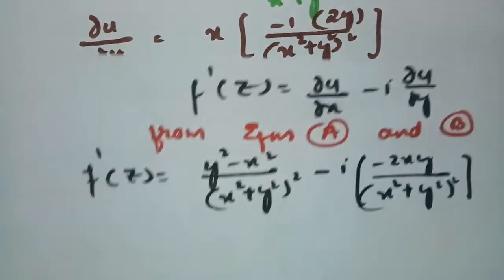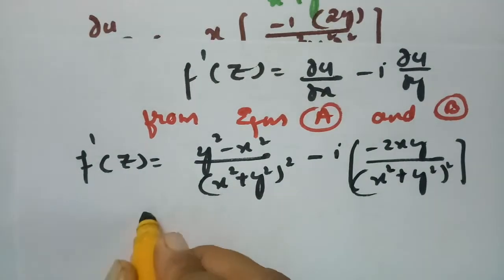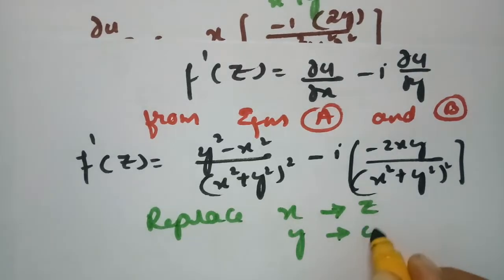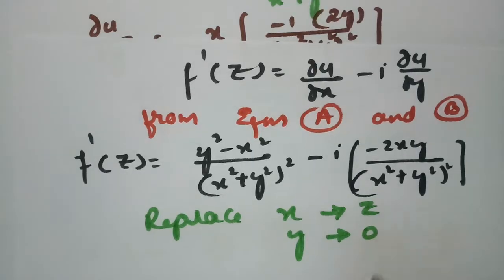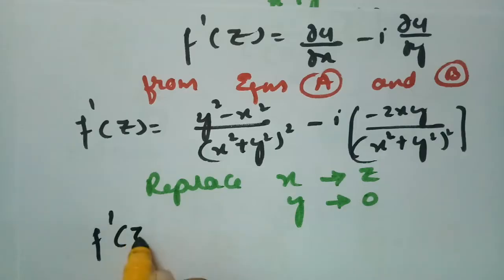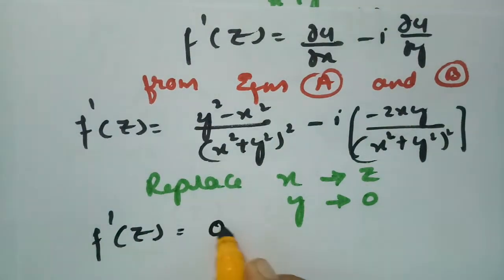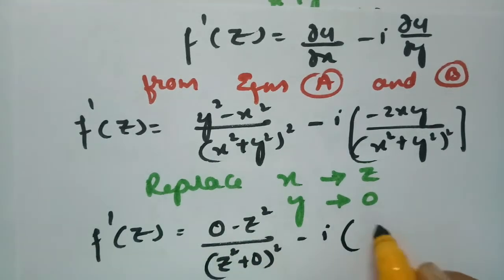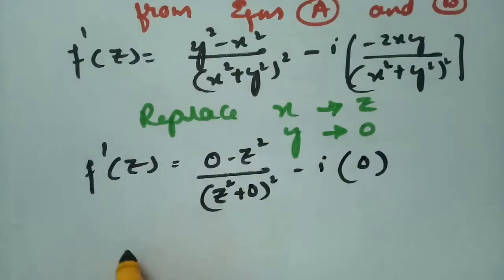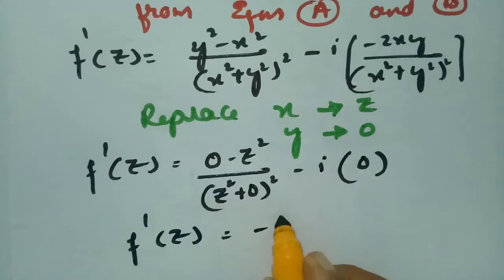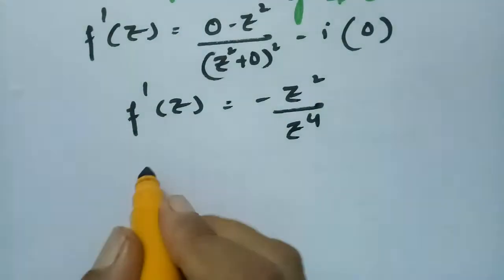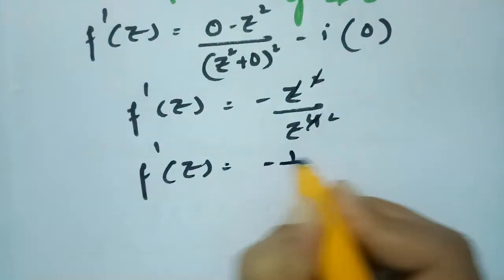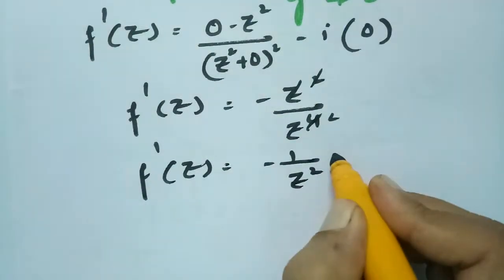According to the Milne-Thomson method, I replace x by z and y by 0. Substituting: in place of y put 0, so the numerator becomes 0 - z² = -z², and the denominator is (z²+0)² = z⁴. The second term vanishes since y=0. Therefore f'(z) = -z²/z⁴ = -1/z².